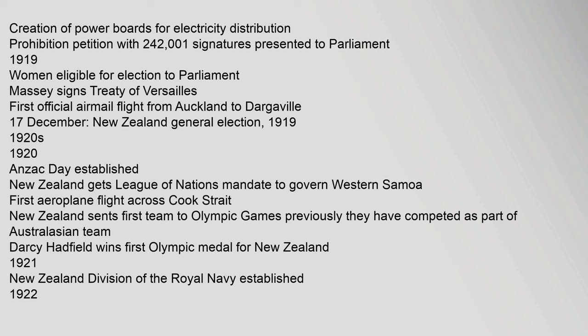Creation of Power Boards for Electricity Distribution. Prohibition Petition with 242,001 signatures presented to Parliament. 1919: Women eligible for election to Parliament. Massey signs Treaty of Versailles. First official airmail flight from Auckland to Dargaville. 17 December: New Zealand general election. 1920s: 1920: Anzac Day established. New Zealand gets League of Nations mandate to govern Western Samoa. First aeroplane flight across Cook Strait. New Zealand sends its first team to the Olympic Games.